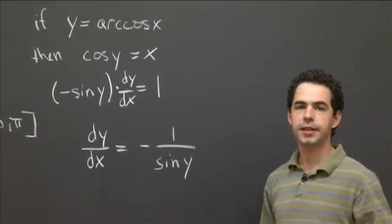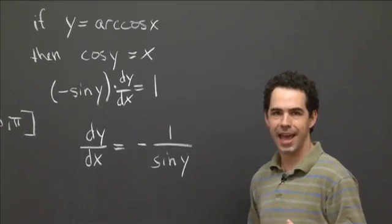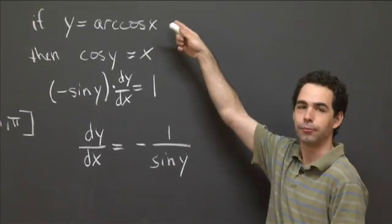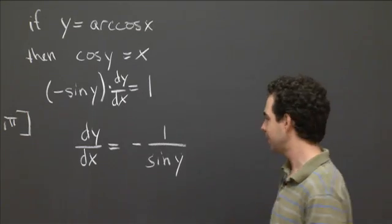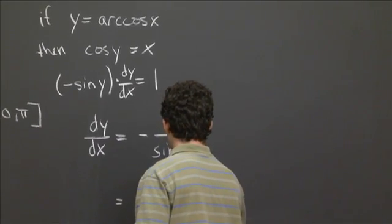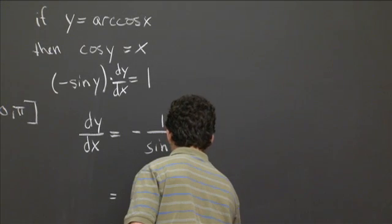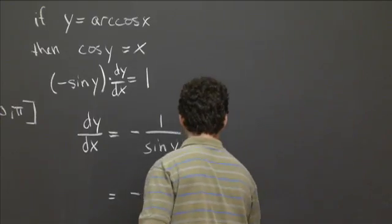This is a nice formula. But what we'd really like, ideally, is to express this back in terms of x. And so we can substitute. We have an expression for y in terms of x. So that's y is equal to arc cosine of x.